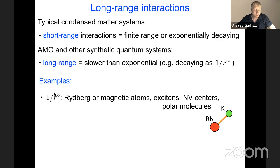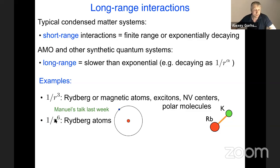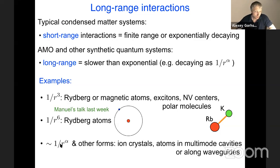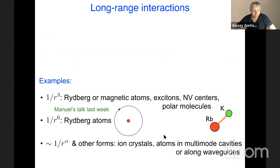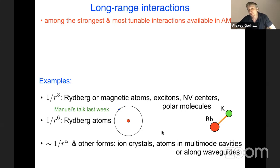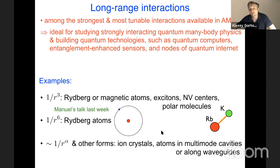Examples include dipolar interactions between electric dipoles such as Rydberg atoms, excitons, polar molecules, or magnetic dipoles such as magnetic atoms and NV centers. Another example is van der Waals-type 1/r^6 interactions between Rydberg atoms. You can also get 1/r^α interactions with tunable exponent α, as well as more complicated interactions between internal spin states of ion crystals mediated by phonons, or atoms in multi-mode cavities or along waveguides mediated by photons.